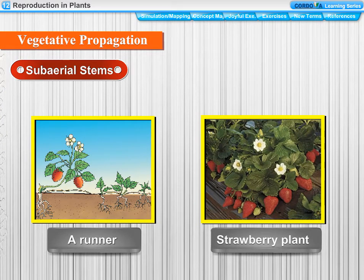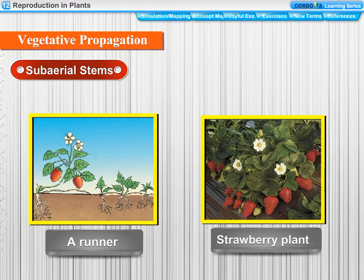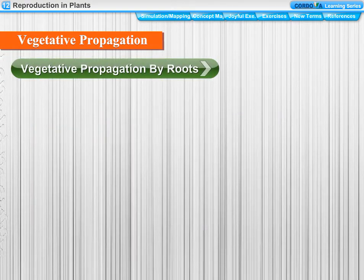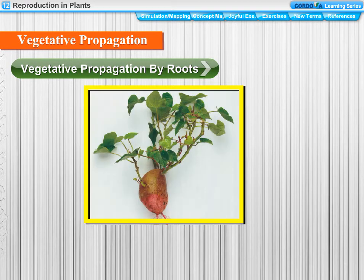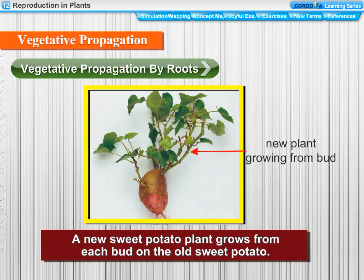Sub-aerial stems: in some plants, branches growing from the base of the stem creep along the ground or just below the ground. Grasses, strawberry plants, and mint plants grow in this manner under natural conditions. Vegetative propagation by roots: certain plants have tuberous roots which are swollen due to the storage of food. A new sweet potato plant grows from each bud on the old sweet potato root tuber.